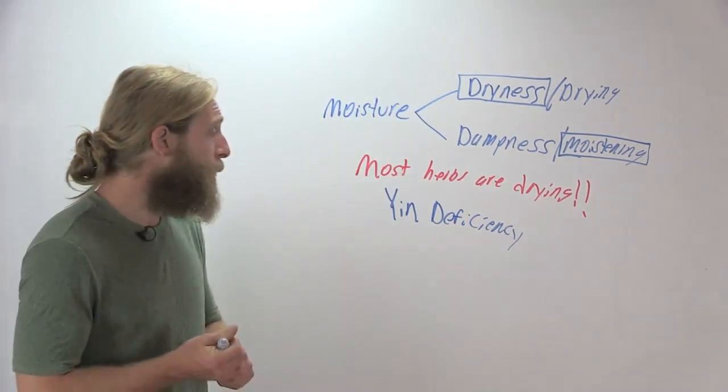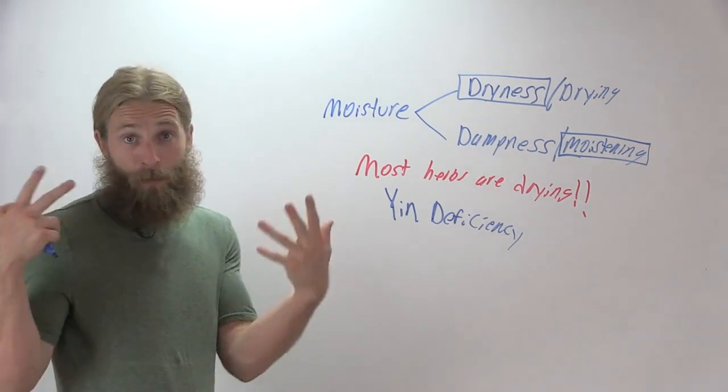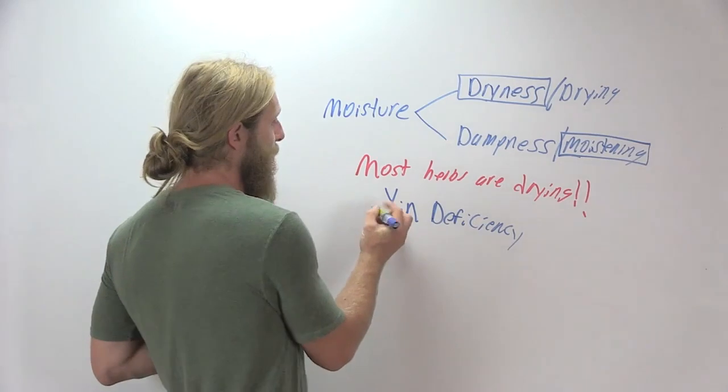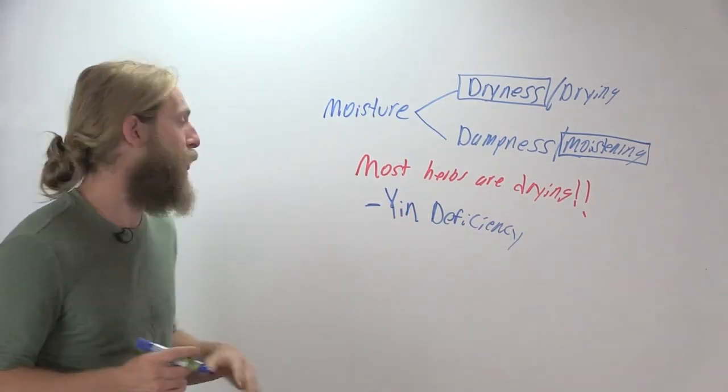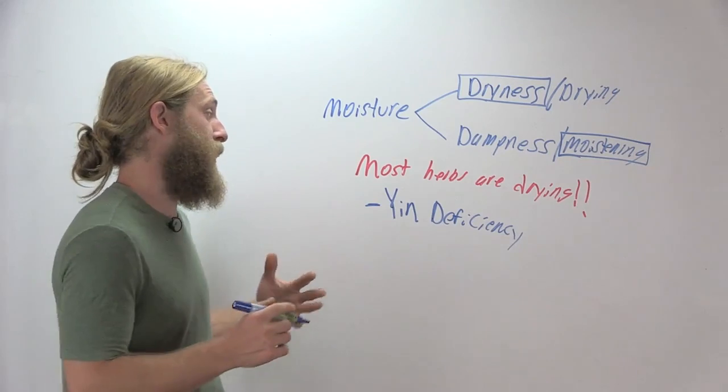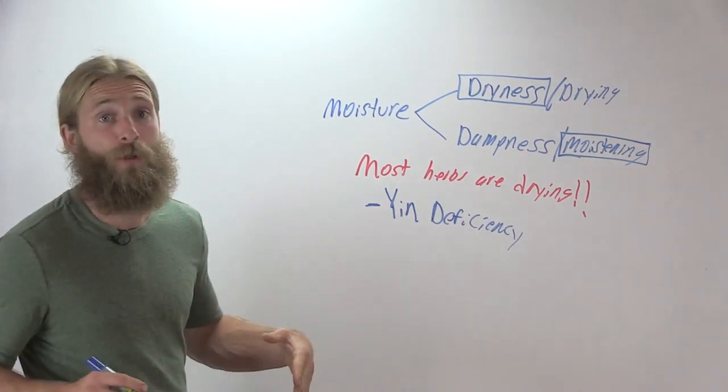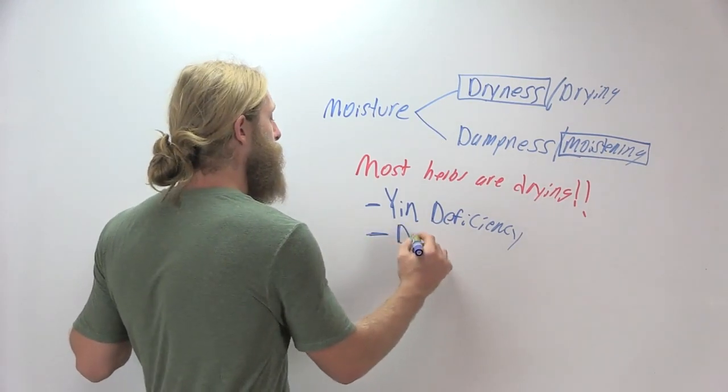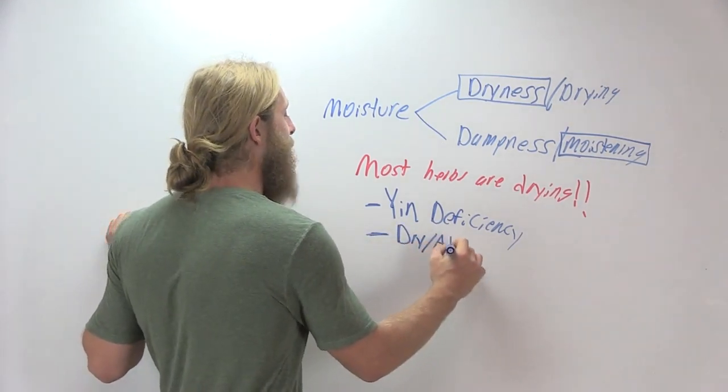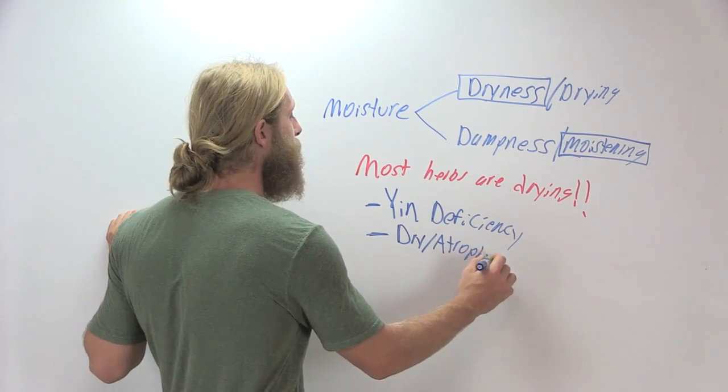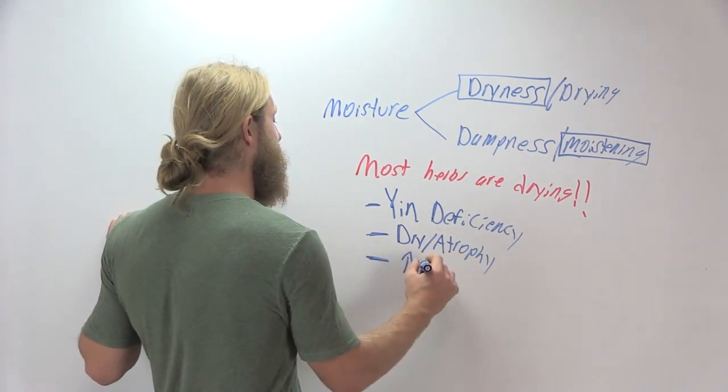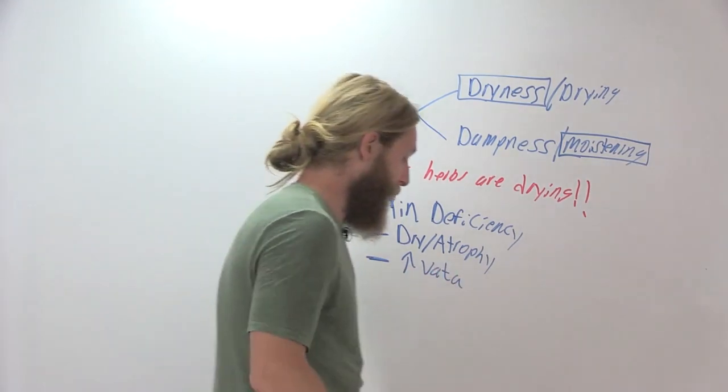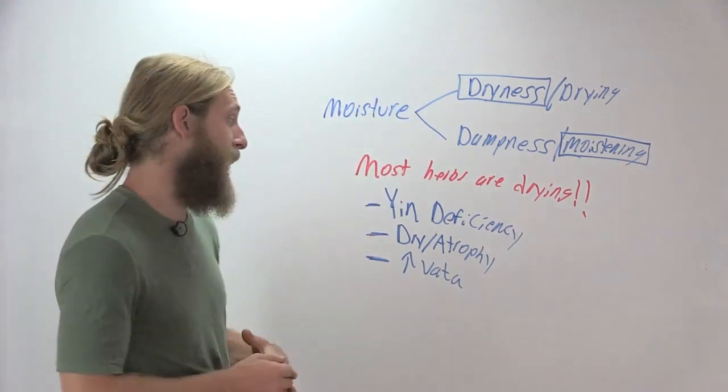In terms of assessment criteria that we would describe from different traditions: in Chinese medicine, this would be referred to as yin deficiency. In our Western physiomedicalist tradition, this would be referred to as the dry atrophy tissue state. And in Ayurveda, this would be considered an excess of vata dosha, which is predominantly the dry dosha in Ayurveda.